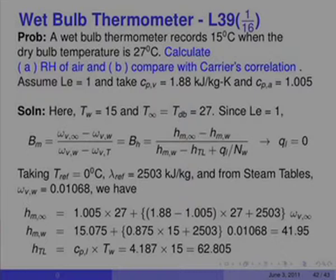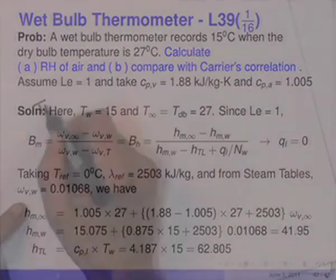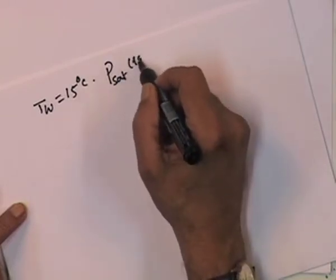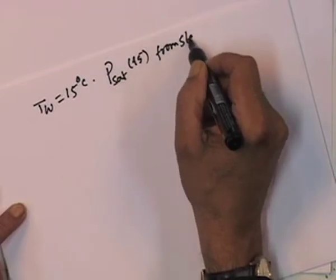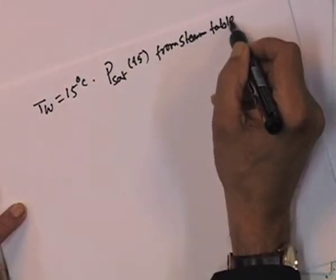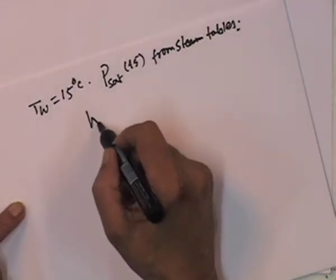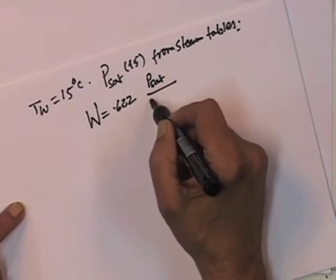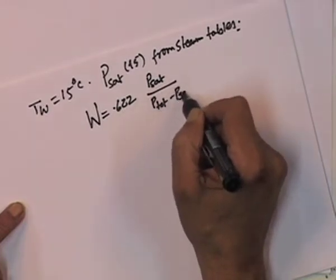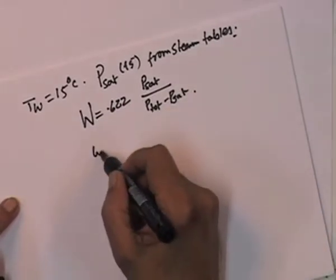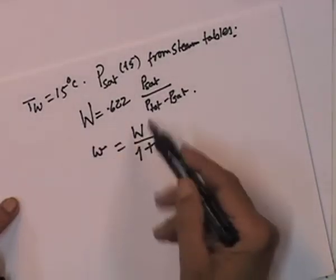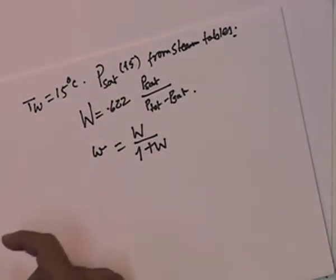If we take T_ref equal to 0°C, then lambda_ref, the latent heat, is 2.03 kJ/kg. From steam tables we evaluate omega_V_w: since T_w equals 15°C, we read P_sat at 15°C from steam tables, evaluate the specific humidity as 0.622 × P_sat / (P_total − P_sat), and then omega equals w over (1 + w). Carrying out these calculations, omega_V_w turns out to be 0.01068.